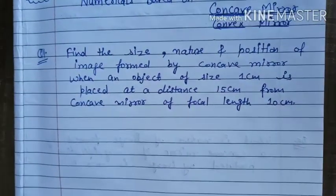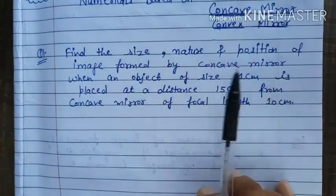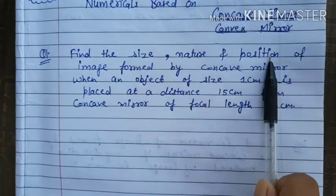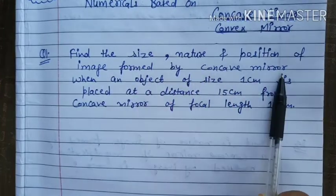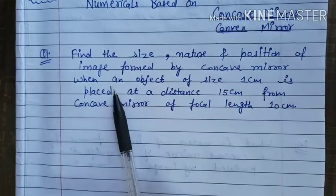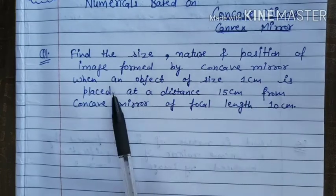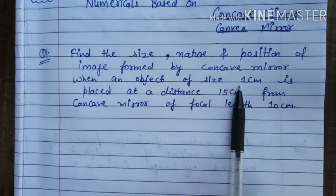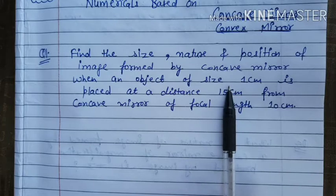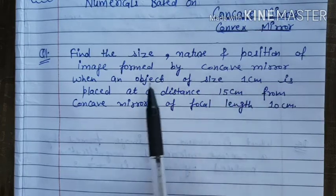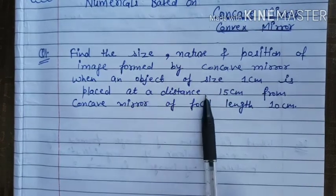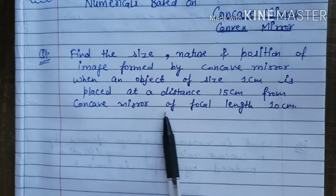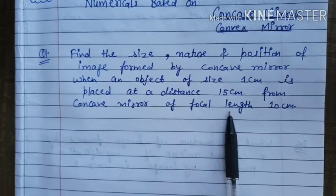Question number one: find the size, nature, and position of the image formed by a concave mirror, when an object of size one centimeter is placed at a distance of 15 centimeters from the concave mirror.